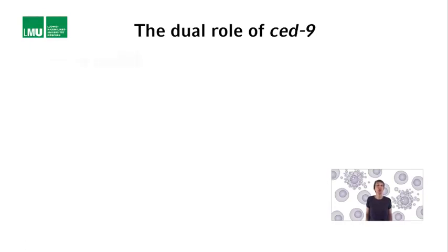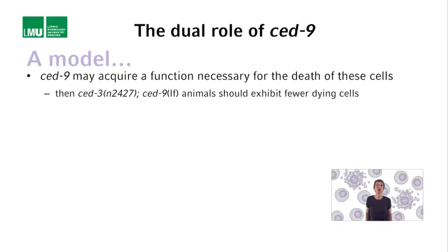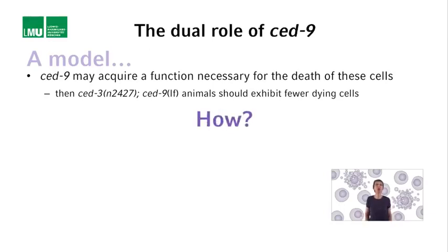One model that could explain this is that in those 131 cells that are programmed to undergo apoptosis during development, SET9 actually acquires a function that is necessary for the death of these cells. In that case, removing SET9 function in the N2427 background should result in even fewer cells dying and therefore more extra cells. And that's what was observed.